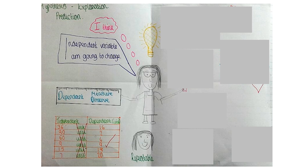There are two important terms: repeatable and reproducible. Repeatable is when the same variables are repeated by the same investigator, whereas reproducible is when the same variables are re-measured by a different investigator. So: repeatable — same person; reproducible — different people. A memory aid: think about biological reproduction, which requires two separate parents, so two separate people to reproduce data.